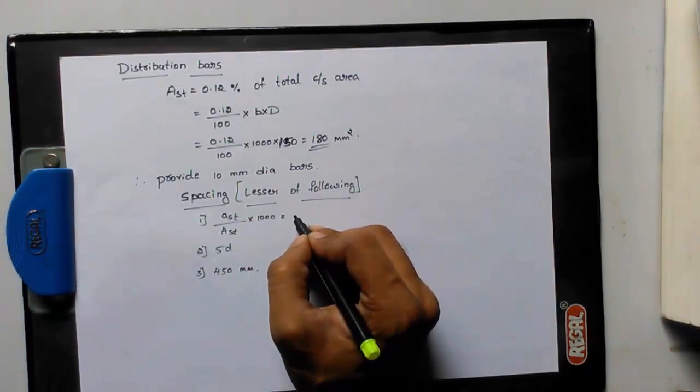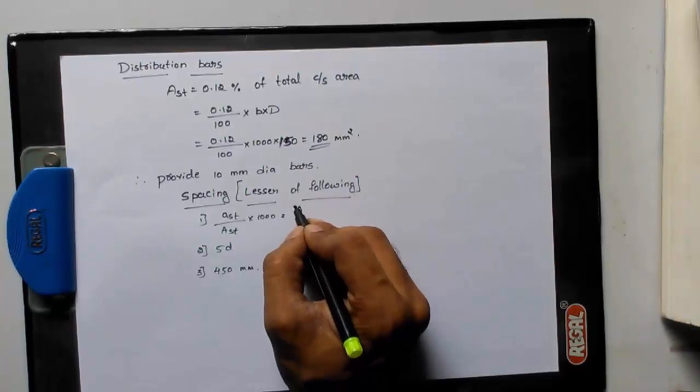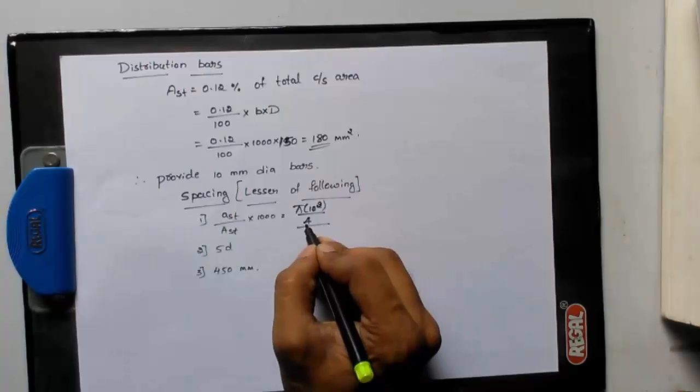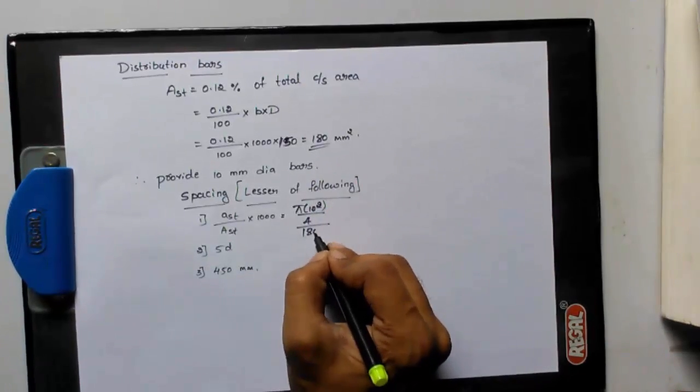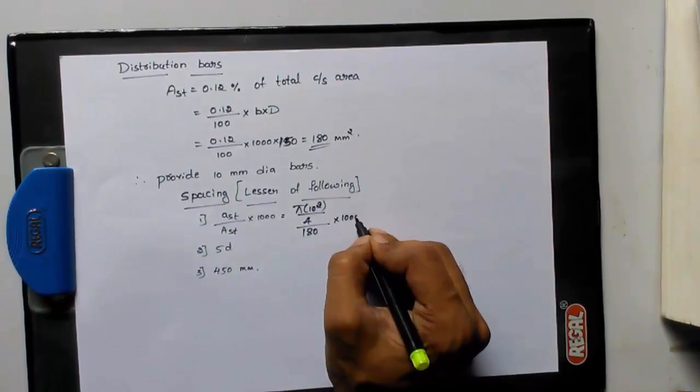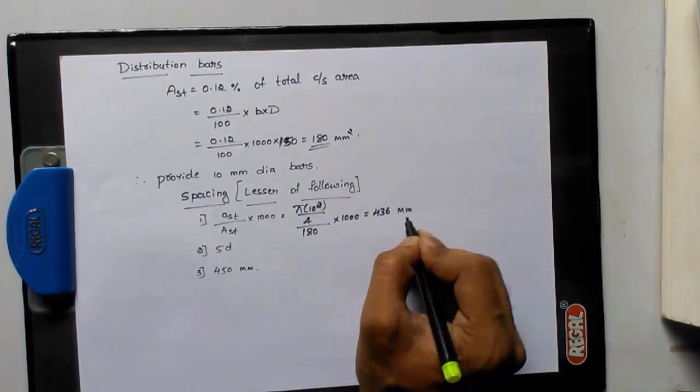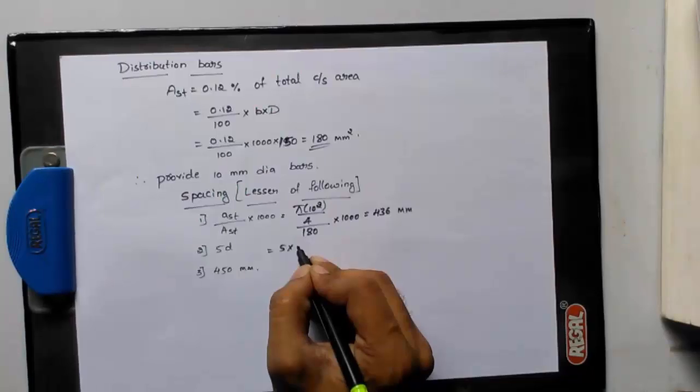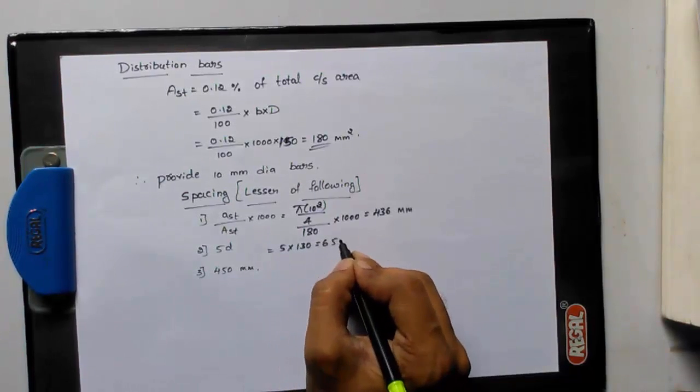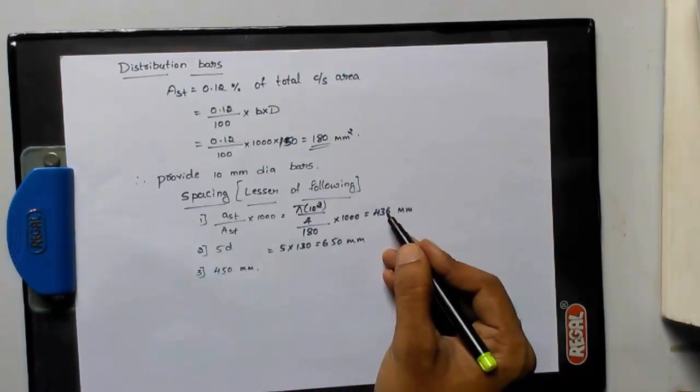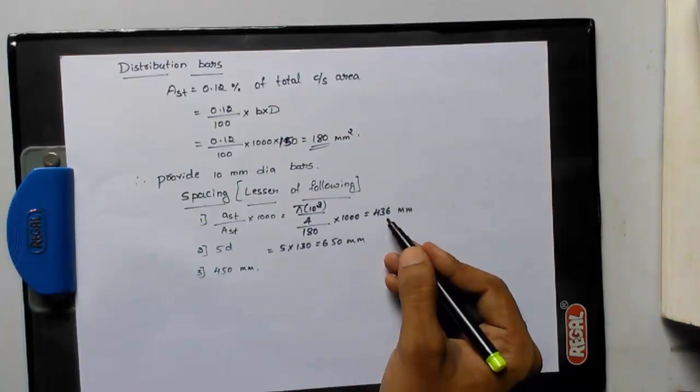Small ast is pi into 10 square divided by 4 into capital AST, which is 180, into 1000. We will get 436 mm. 5d, 5 into 130, we will get 650 mm. And last one 450 mm. So lesser one is 436. Here we need to round up to 430 mm center to center.